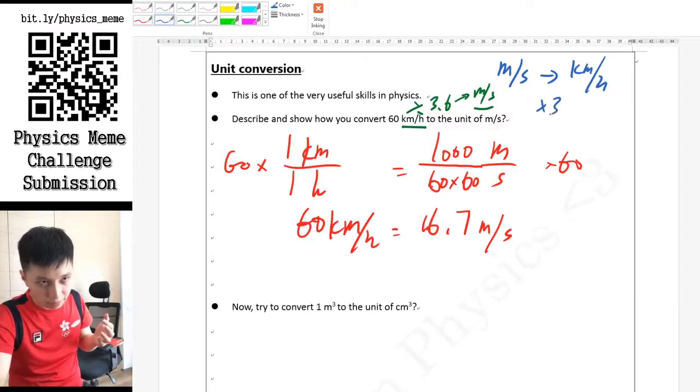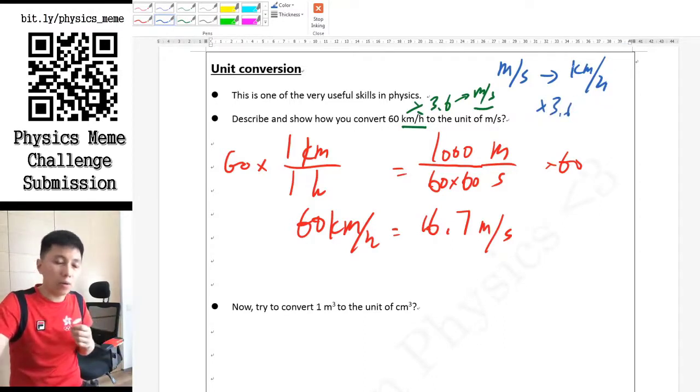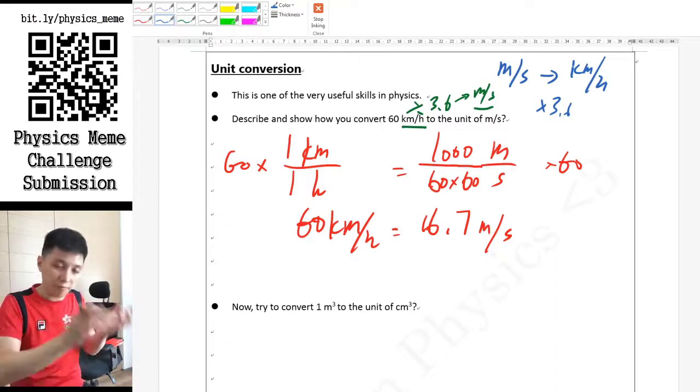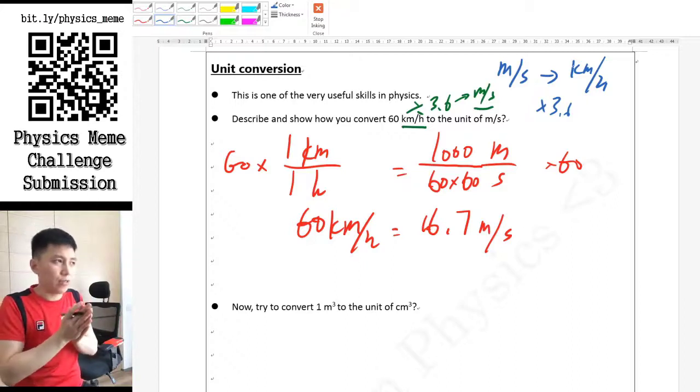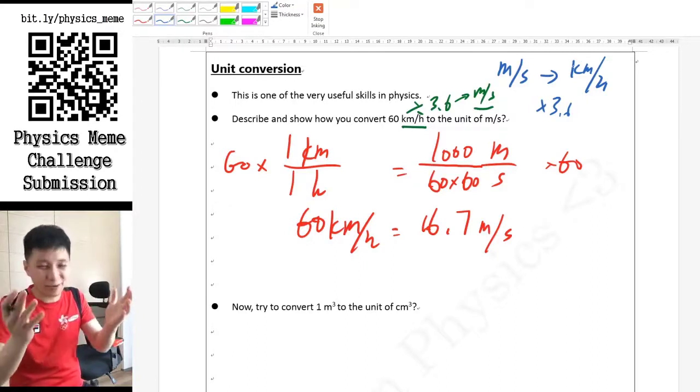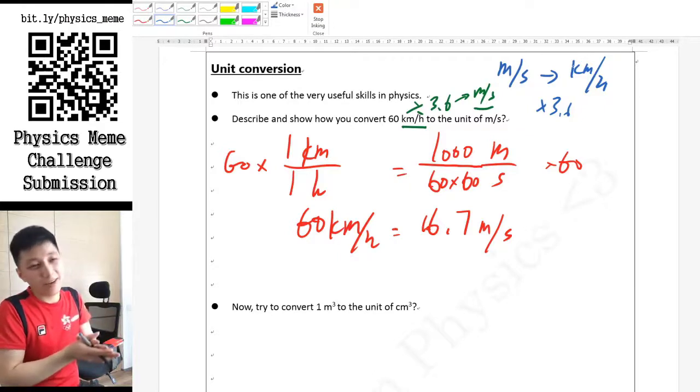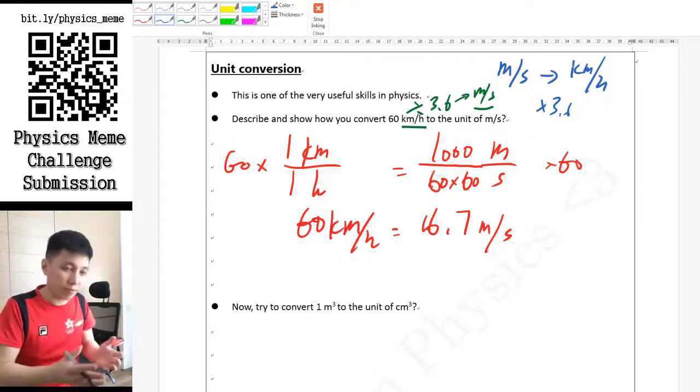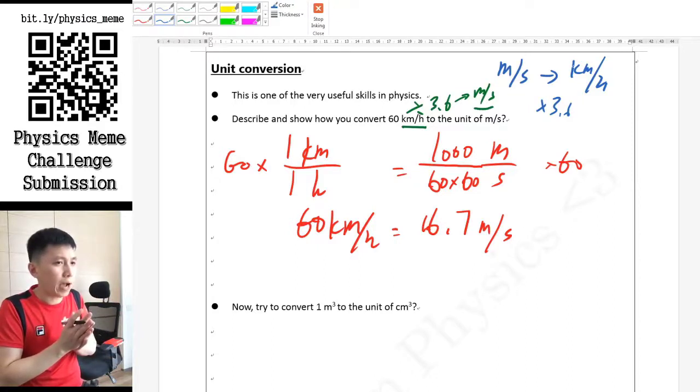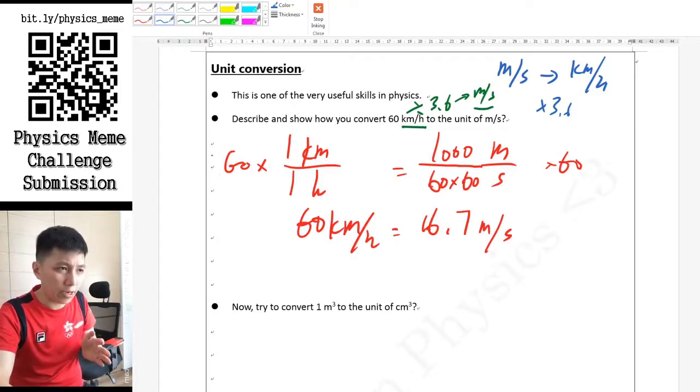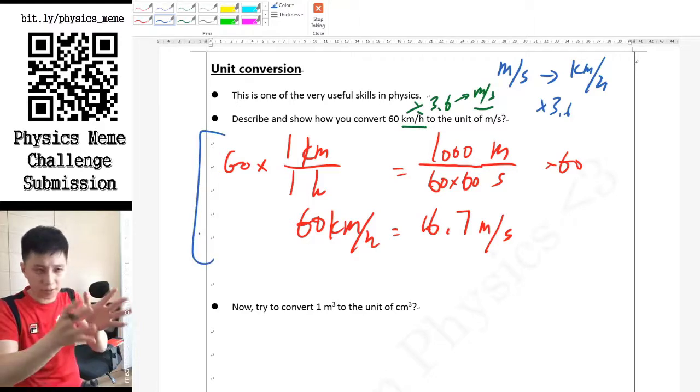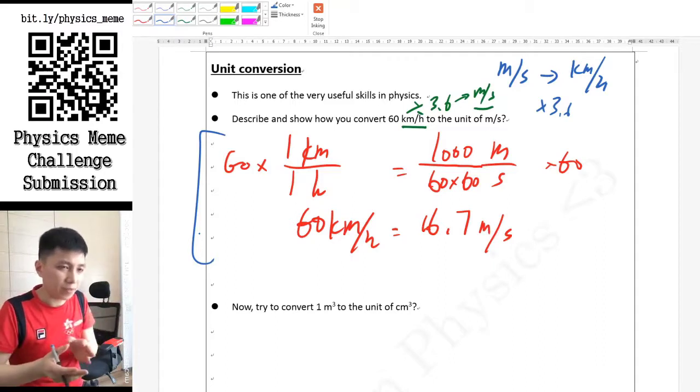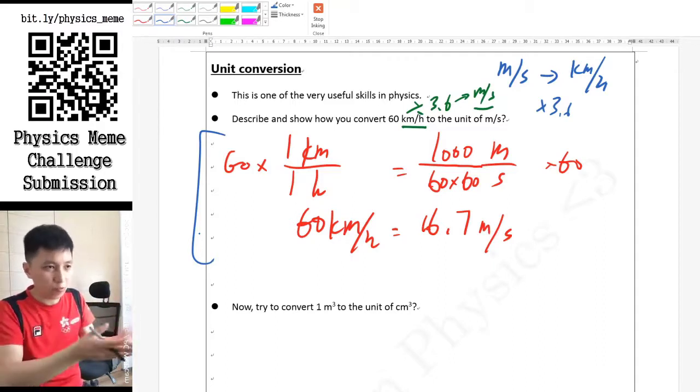I suppose you only remember 3.6, but you probably won't remember if it is divide or times. It just takes me a lot of brain cells to remember all these things. I hate memorizing stuff, and that's why I like physics - because many things in physics you can actually derive. I would rather stick with the way that I do here. I don't have to remember basically anything - as long as you know 1 km is 1000 meters and one hour is 3600 seconds, you'll be able to work out the answer.